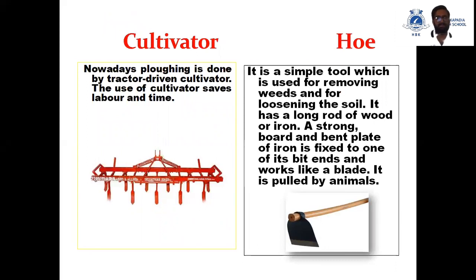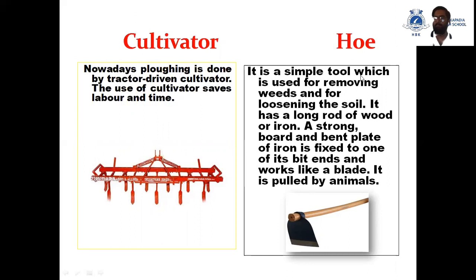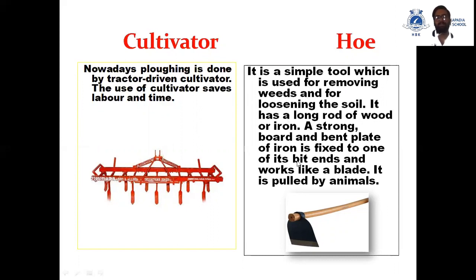The other two tools are the cultivator and the hoe. Nowadays, plowing is done by the tractor-driven cultivator. The use of a cultivator saves labor and time. The hoe is a simple tool which is used for removing weeds and for loosening the soil. It has a long rod of wood or iron with a strong broad bent plate of iron fixed to one of its ends, which works like a blade. It is pulled by animals.